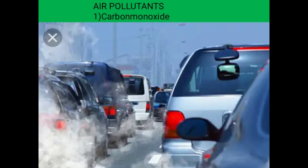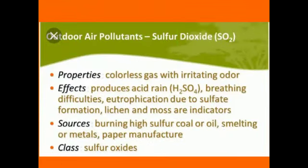Hydrocarbons are mainly composed of hydrogen and carbon. Carbon monoxide is a combination of carbon and oxygen which tends to pollute our atmosphere. We also have another air pollutant which is sulfur dioxide. Sulfur dioxide is produced when we burn coal or oil, or when we smelt metals — and in this process of smelting metals, this deadly gas is emitted into the atmosphere.